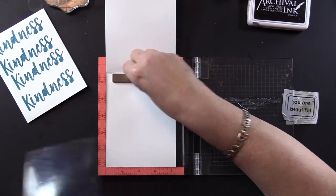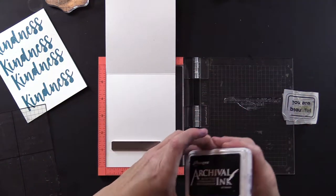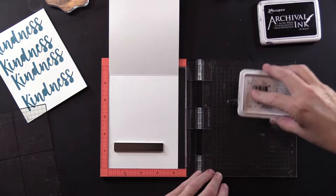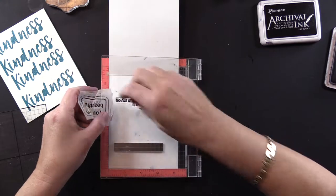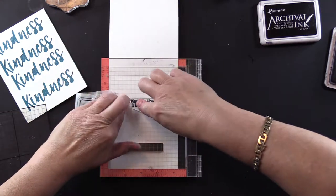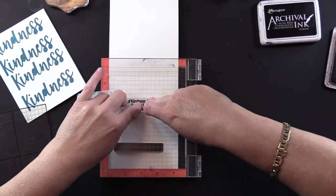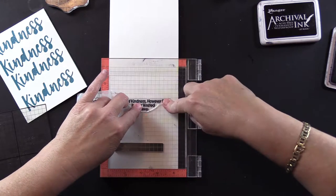Lift it off. I'm gonna use Ranger Archival ink in Jet Black for my sentiment and I did do my little trick with the Versamark ink since it's the first time I'm using my stamp.